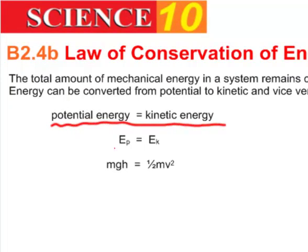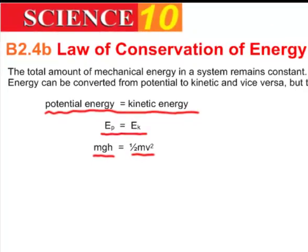Symbolically, we would say EP is equal to EK. Mathematically, using our math symbols, we would say MGH — mass times gravity times height for potential energy — is equal to one half MV squared for kinetic energy.